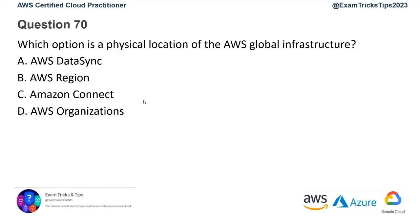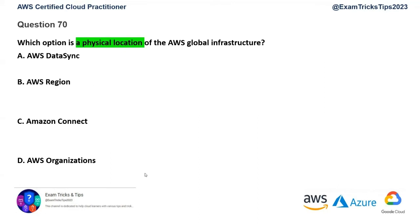Question number 70: which option is a physical location of the AWS global infrastructure? Please mark your keyword and see if you can get the correct answer from the available options. There is only one keyword here: 'physical location.' Out of the options, what pinpoints to a particular geographical physical location? We'll go by elimination technique.